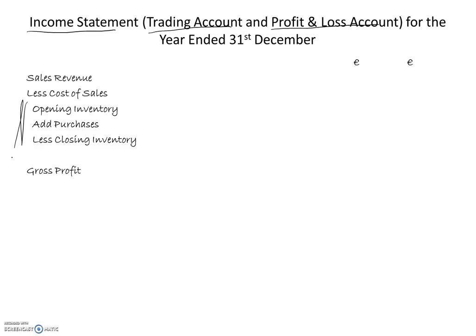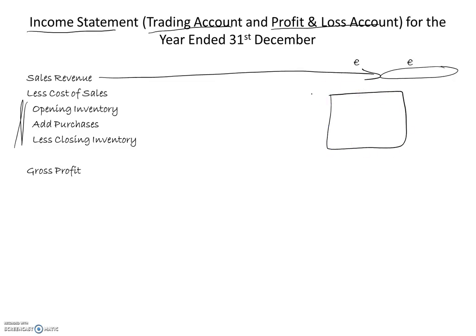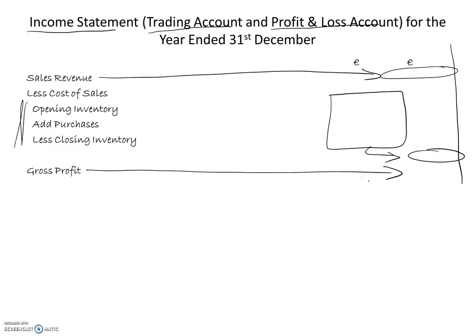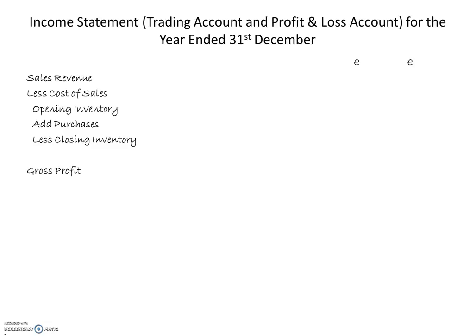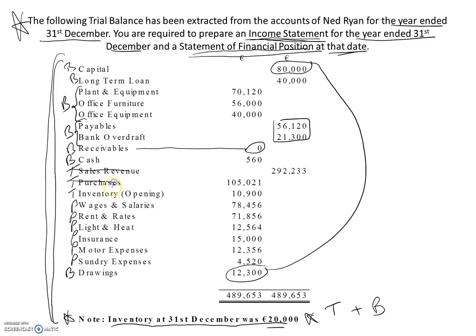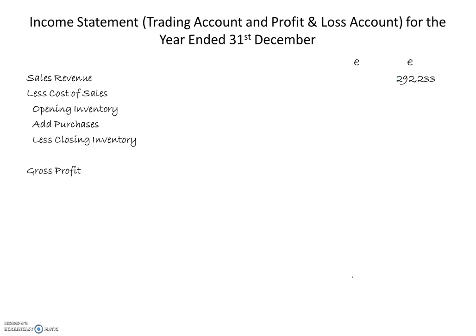Now we need to put the figures in. I am going to put the sales revenue on the extreme right-hand side, then step in and work out the cost of sales. Going back to the trial balance, we are looking for the items with T on them: the sales, the purchases, the opening inventory, and down at the bottom the closing inventory. So we have the sales in the right-hand column, then stepping in to work out the cost of sales — opening inventory, add on the purchases, take away the closing inventory — and bring the total out lined up underneath the sales revenue. Taking the cost of sales away from the sales revenue, we get the gross profit. That completes the trading account part of the income statement.